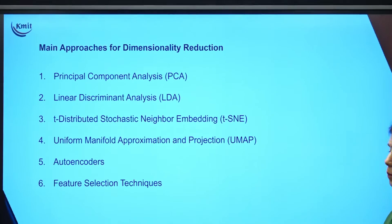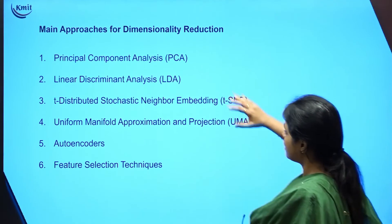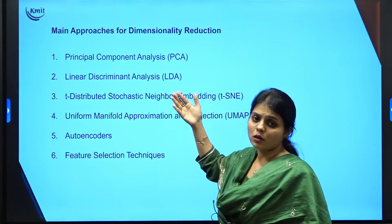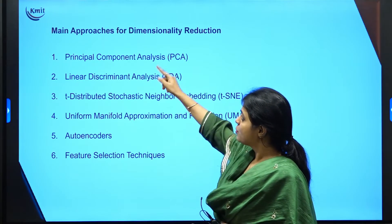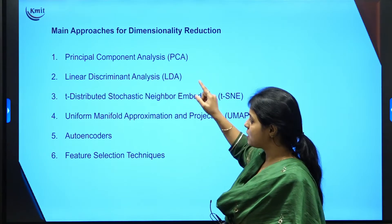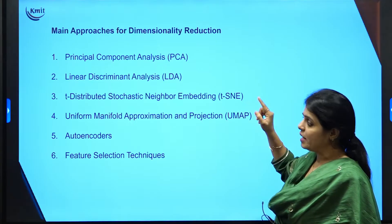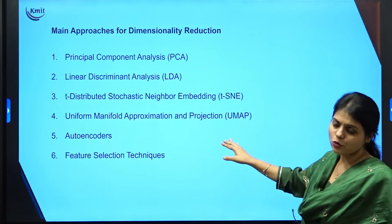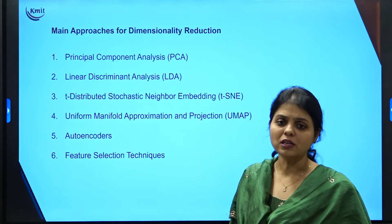When talking about approaches for dimensionality reduction, we have several methods. The most important ones are: Principal Component Analysis (PCA), Linear Discriminant Analysis (LDA), T-distributed Stochastic Neighbour Embedding (TSNE), Uniform Manifold Approximation and Projection (UMAP), autoencoders, and finally various feature selection techniques used for reducing dimensions in a given dataset.